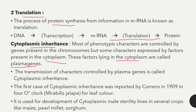The transmission of characters controlled by plasma genes is called cytoplasmic inheritance. The first case was reported by Correns in 1909 in 4 o'clock plant (Mirabilis jalapa) for leaf color. It is used for the development of cytoplasmic male sterility lines in several crops like maize, pearl millet, and sorghum.